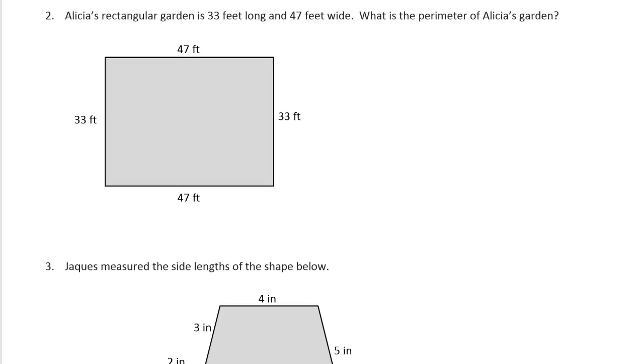Alicia's rectangular garden is 33 feet long and 47 feet wide. What is the perimeter of Alicia's garden? Well, I'm looking at this, we have to add up the sides. I'm looking at what's the best way to do that. Should I add up the 33s first or should I add up a 33 and a 47 first? I'm seeing this 3 and that 7, and that's a 10 right there. So I'm thinking that if I do that, then that's going to be easier to add. I'm just going to write 33 plus 47.